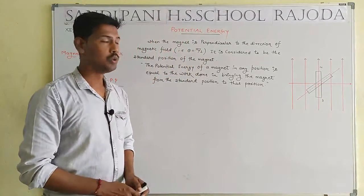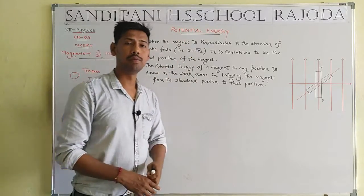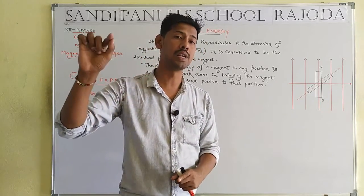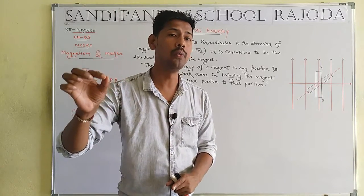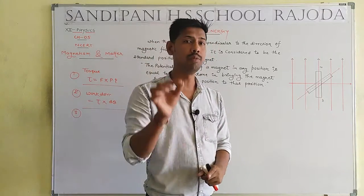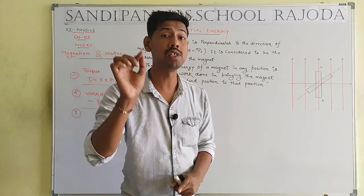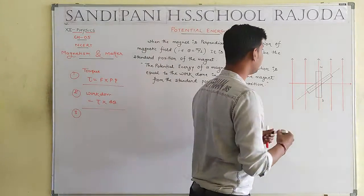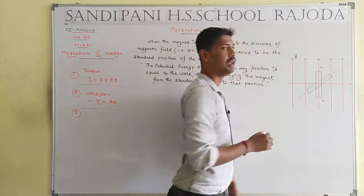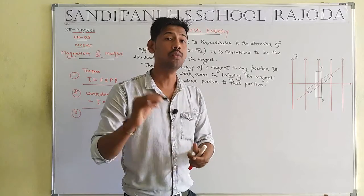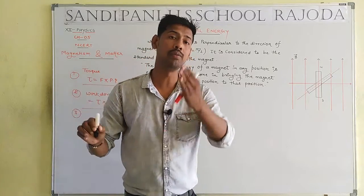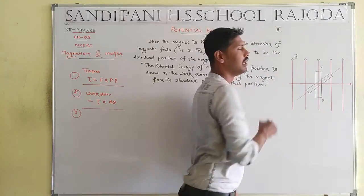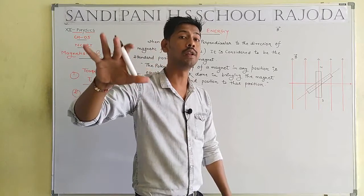Now, what is the meaning of uniform magnetic field? Uniform means the same throughout - the intensity of the magnetic field is always constant. At every point in the magnetic field, the intensity is the same, constant, equal - that is called uniform. Now we take vector B. Vector B is the symbol that defines the intensity of the magnetic field, and it is a vector quantity. So it is represented by vector B.